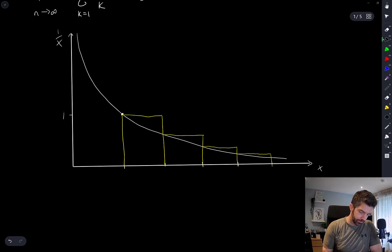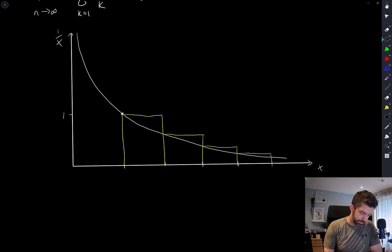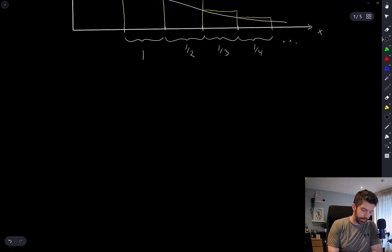So the area of this rectangle is 1, the area of this rectangle is 1/2, the area of this rectangle is 1/3, and the area of this rectangle is 1/4, and so on.